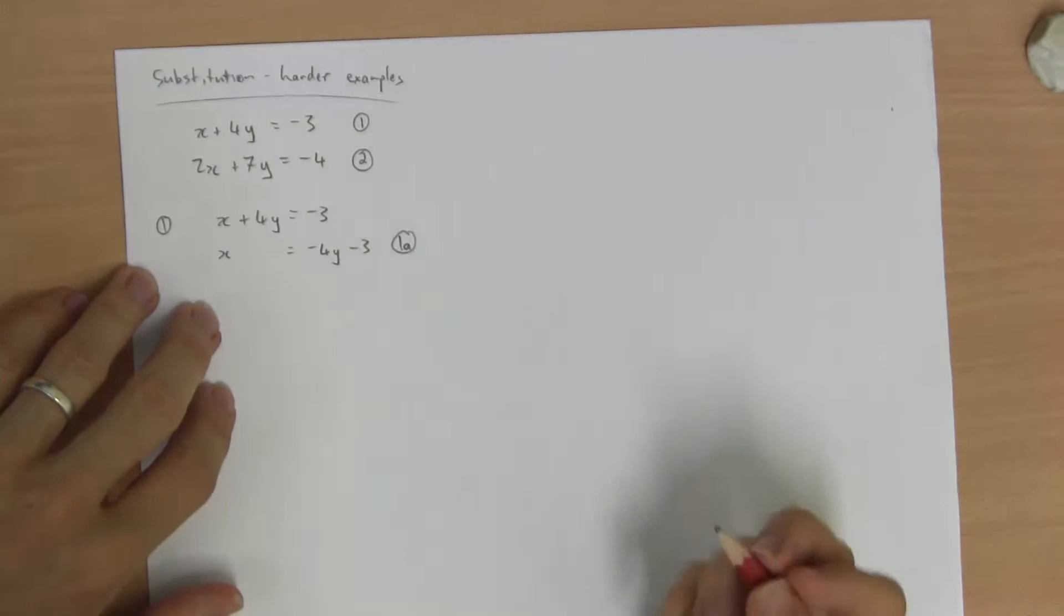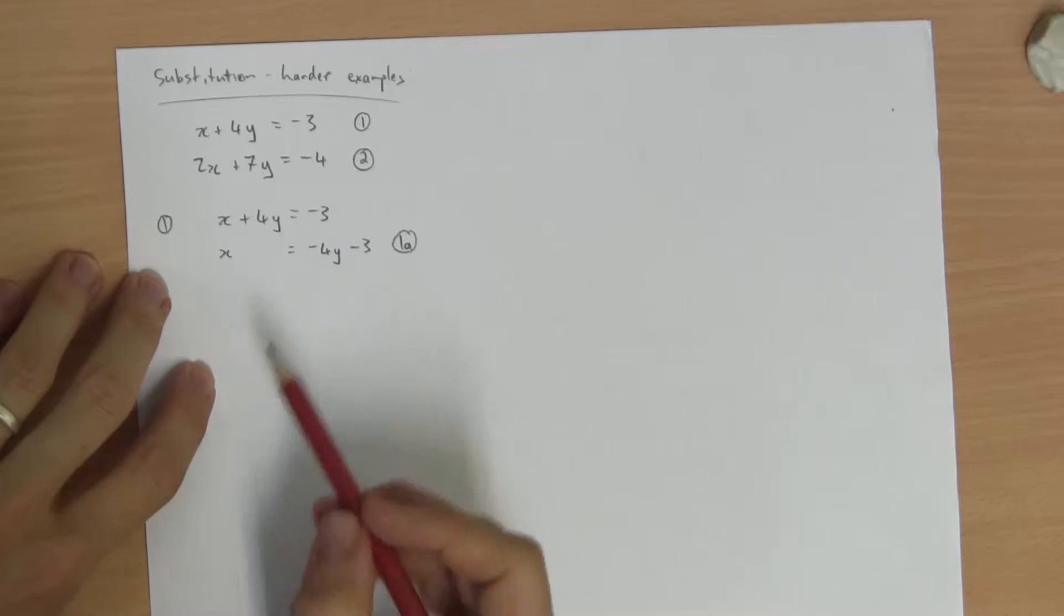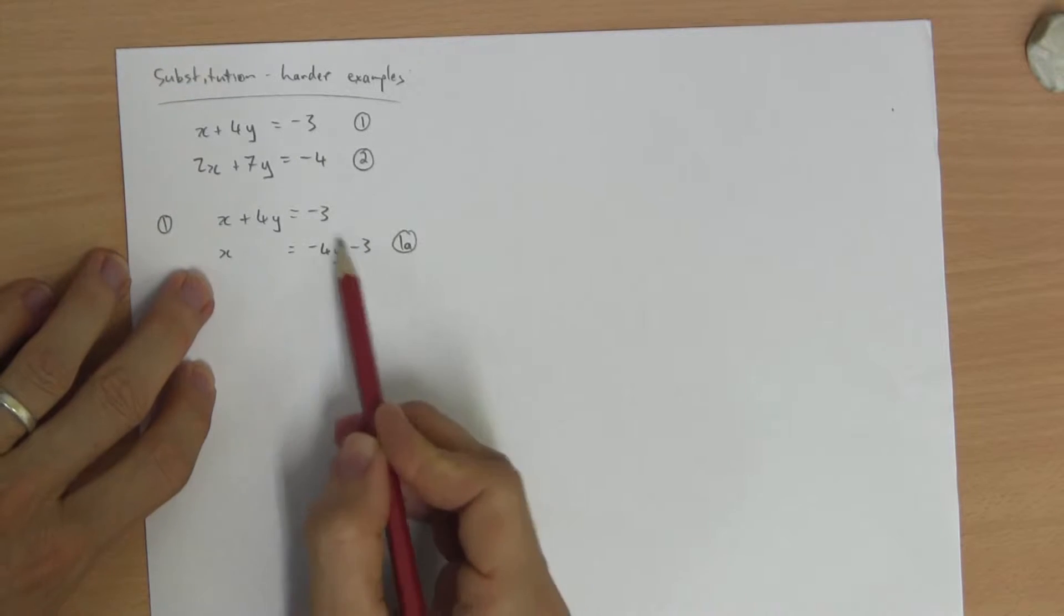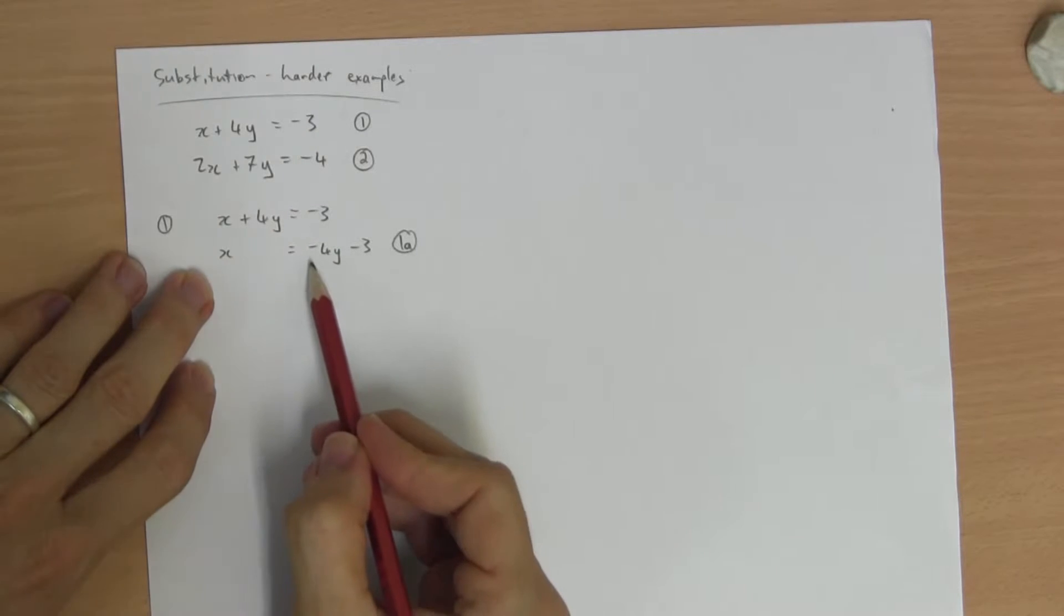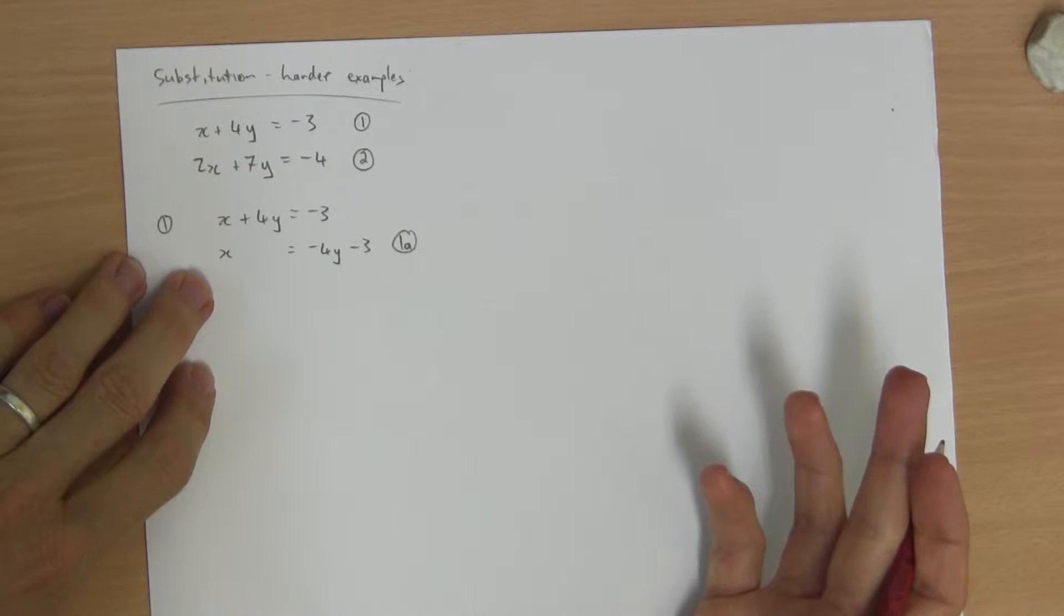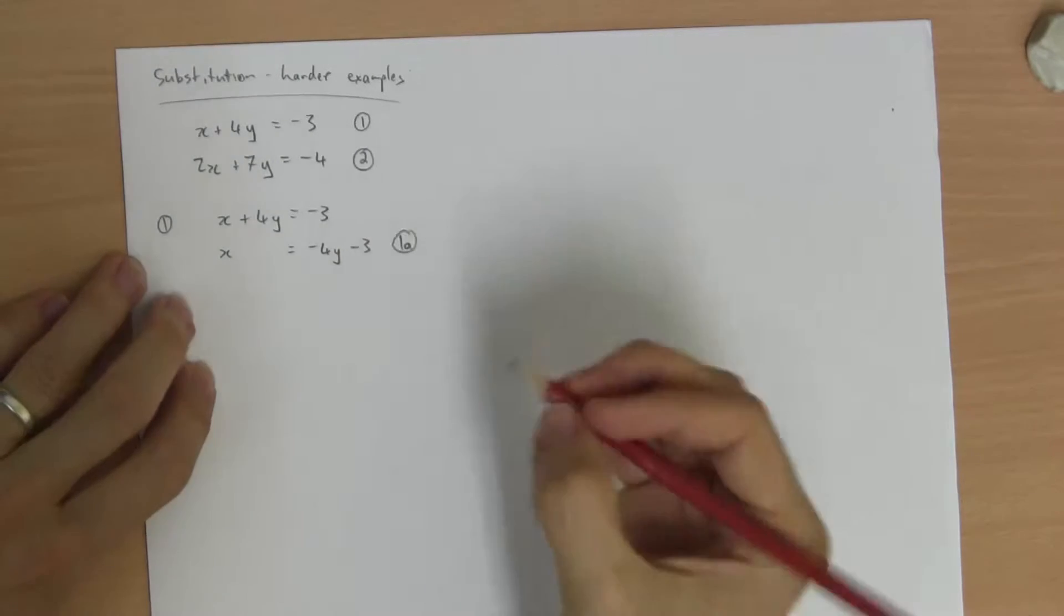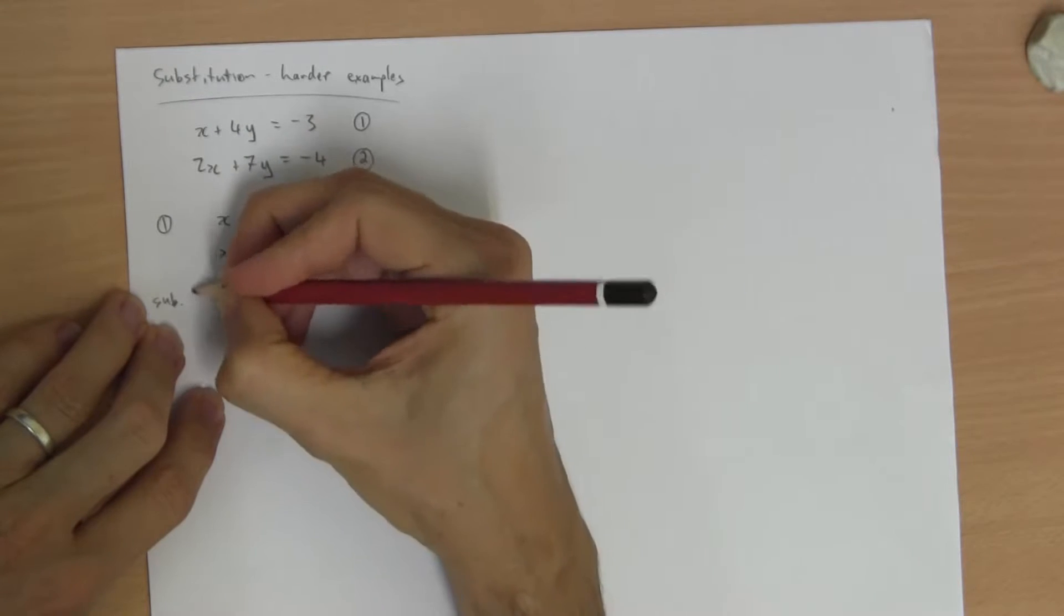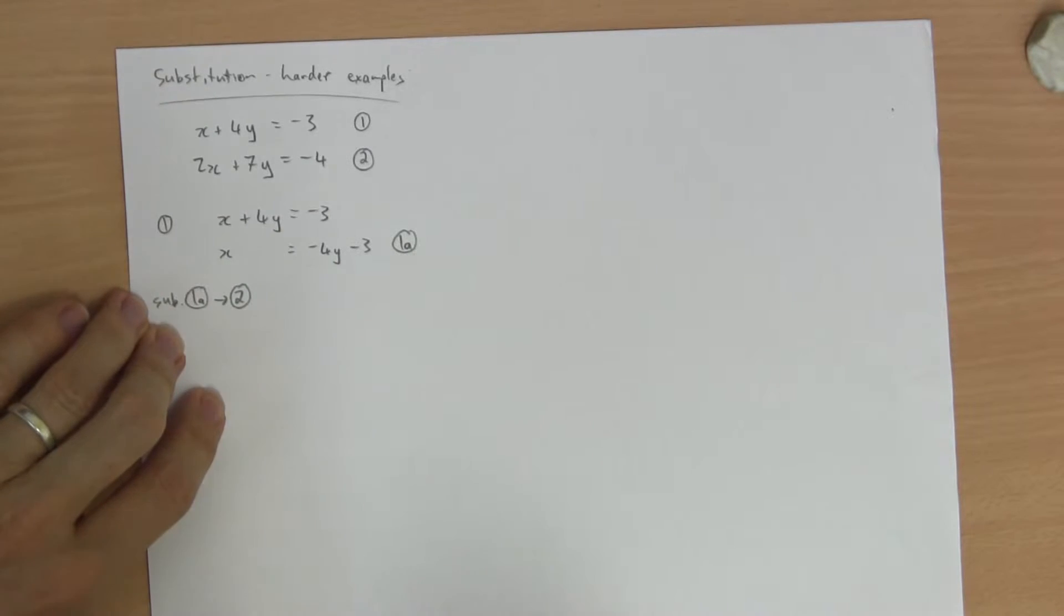You can call it equation 3 if you like. I've now got an equation that says x equals, and I can substitute that into equation 2. Be careful. Don't try substituting this into equation 1 because you'll end up with negative 3 equals negative 3 or something equally useless. So into equation 2 we go. Substitute 1a into equation 2.